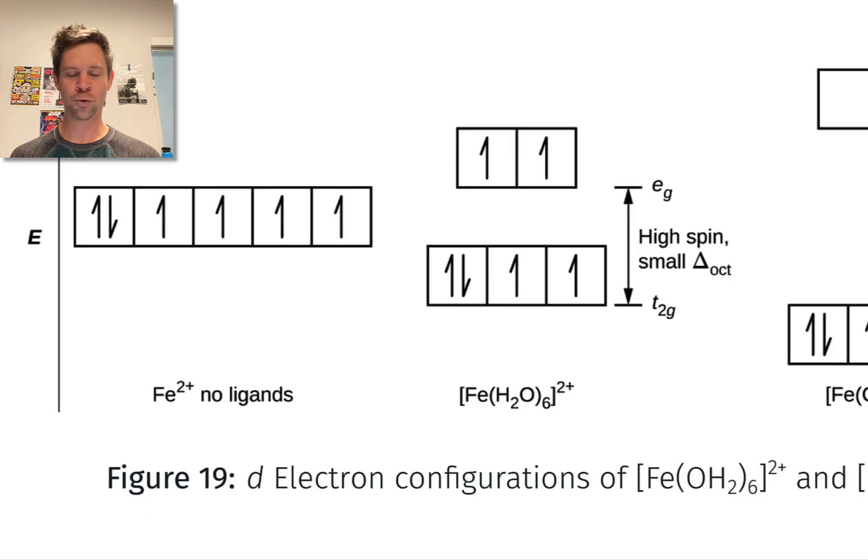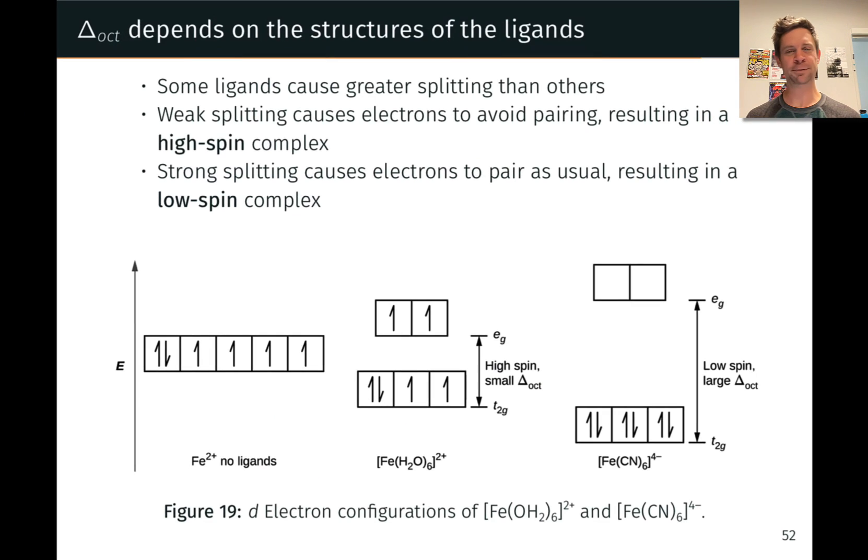Not quite. This is where we're deepening our understanding of crystal field theory. Keep in mind that there's an energetic penalty associated with pairing electrons, because two electrons paired in the same orbital have the same probability distribution, meaning they're relatively close in space, and they tend to repel each other more than electrons that are in spatially distinct orbitals. That repulsion carries an energetic penalty that we call the pairing energy.